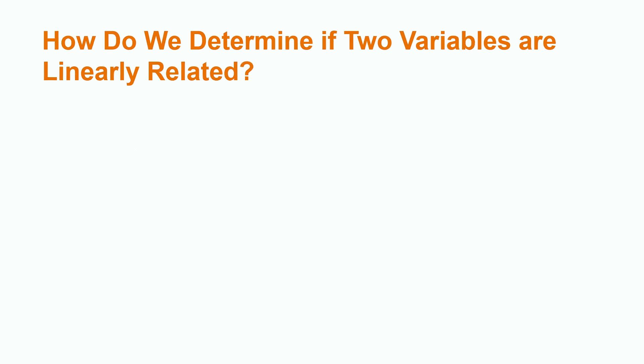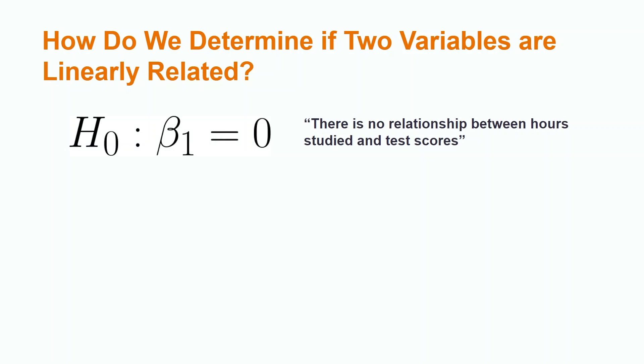We begin our hypothesis test for the population slope by setting up our hypotheses. Our null hypothesis is always in the form of beta1 equals zero when using only one predictor variable. Beta1 is the slope of x, or the amount that y increases or decreases for every one unit change in x. The subscript 1 indicates that it is the first x value being used to predict our value of y. If we have multiple x values, we would use the subscript of the variable we are testing as it is ordered in the linear equation. However, for the purpose of today's lesson, we will only be using one predictor variable.